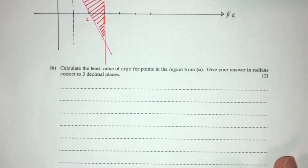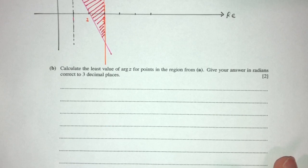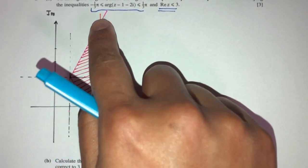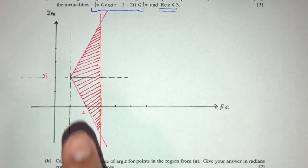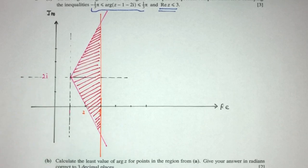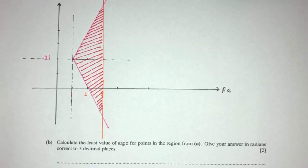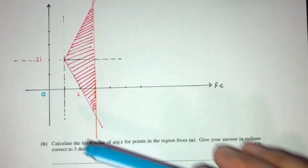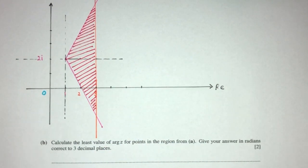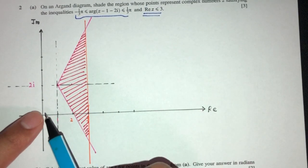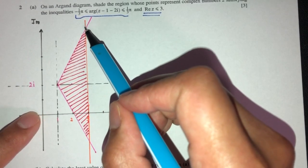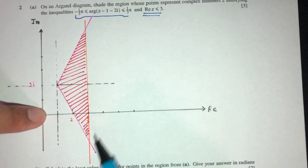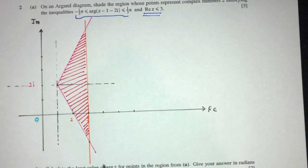For part B, we have to find the least value of arg(z) for points in this region. Z is a complex number and can lie anywhere in the region. By observation: if I put z here it won't be least; putting it on the upper line gives maximum. Putting it on the lower boundary line gives the least value. So I conclude z has to be on the lower line for the least argument.